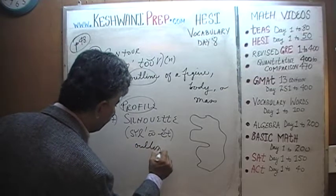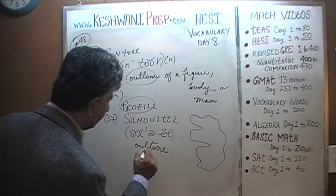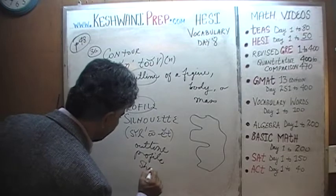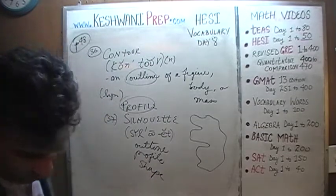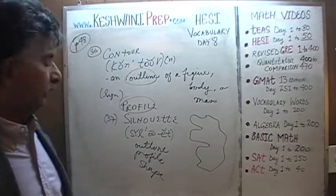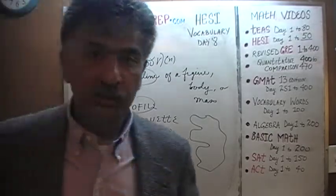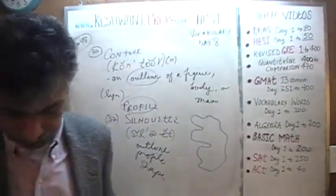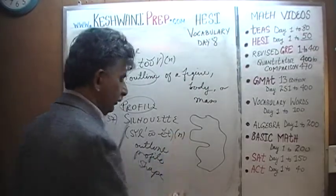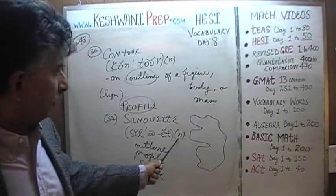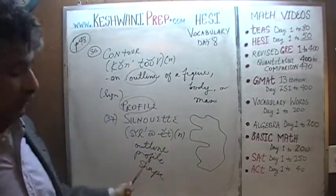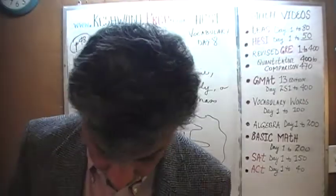An outline of something, a profile of something, a shape of something — that is called a contour or a silhouette. Of course it would have to be a noun, because we said contour is a noun, and since they are synonyms, if one is a noun, the other would have to be a noun as well.